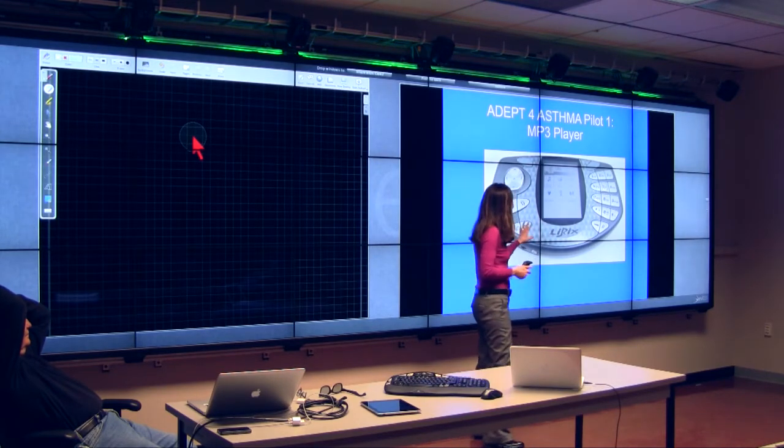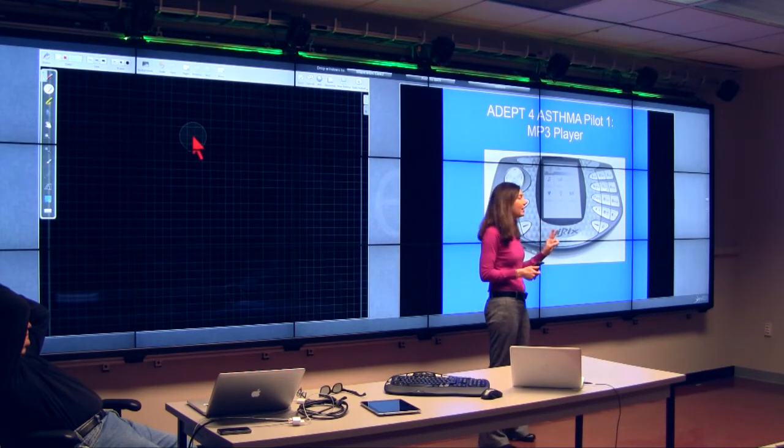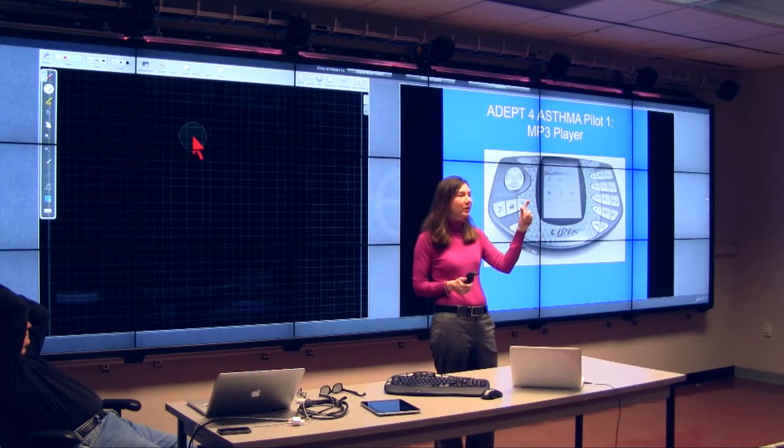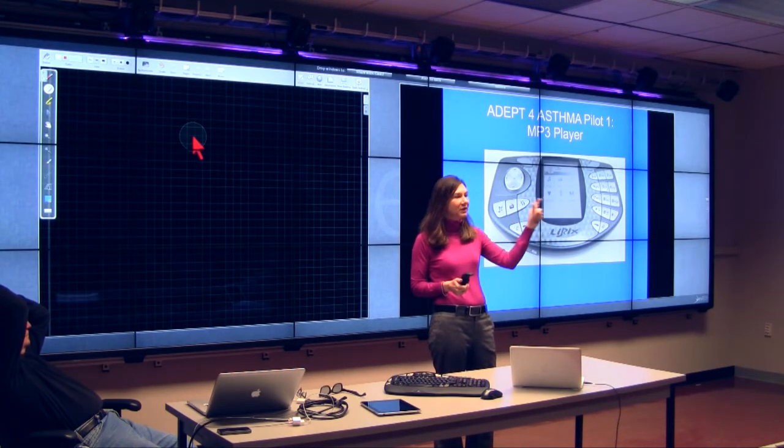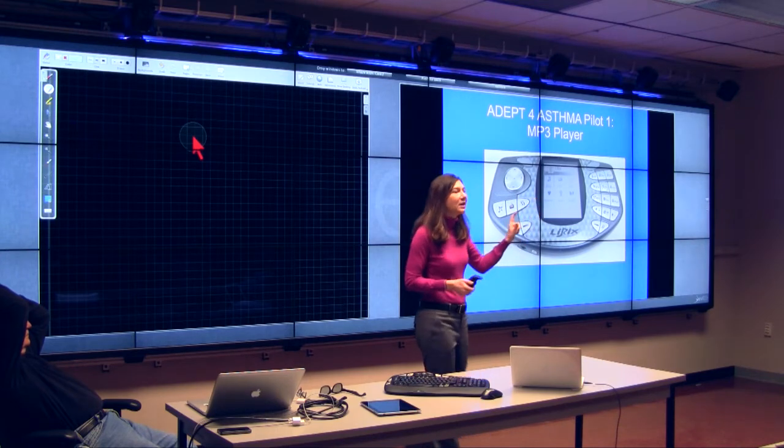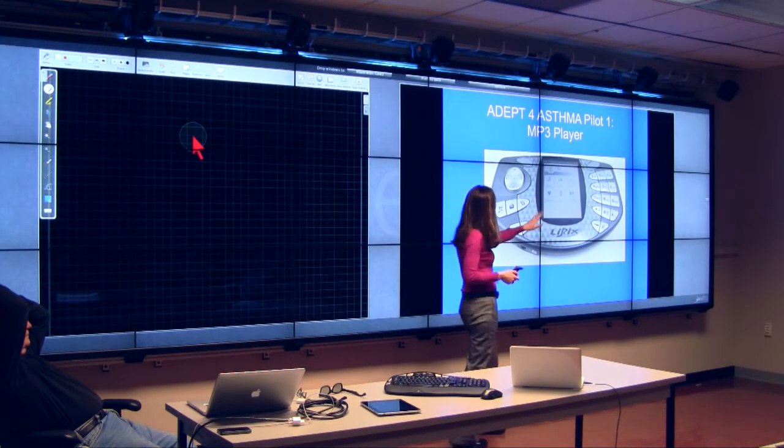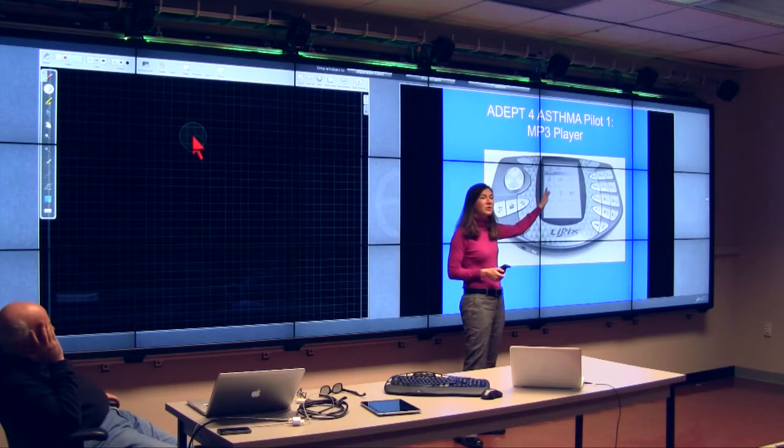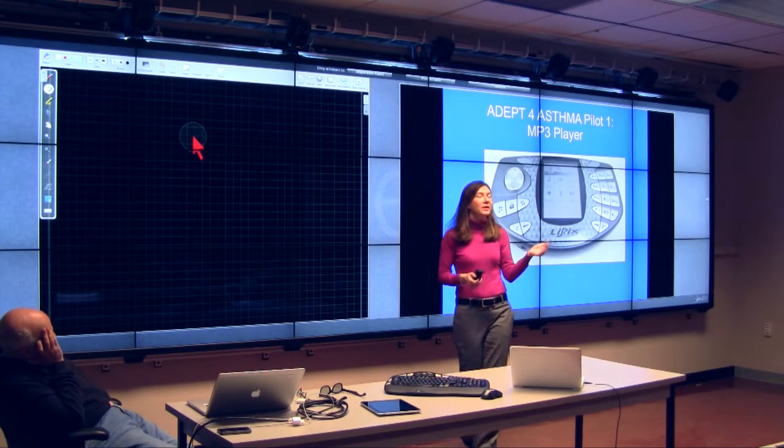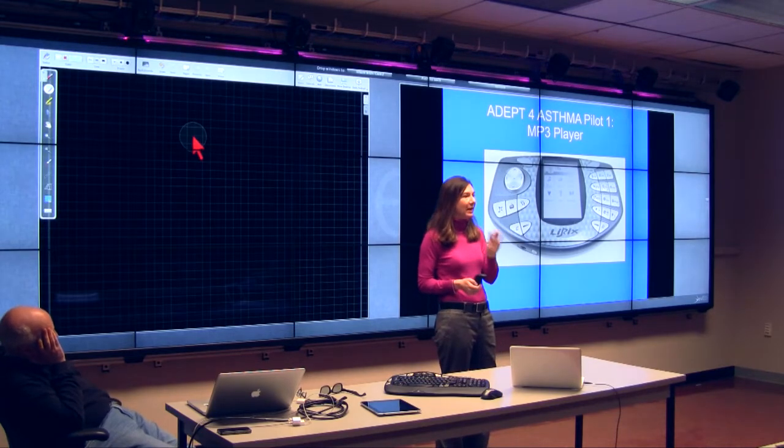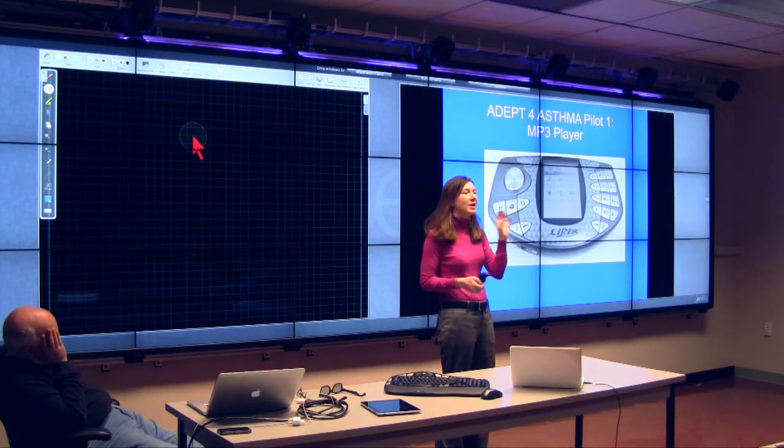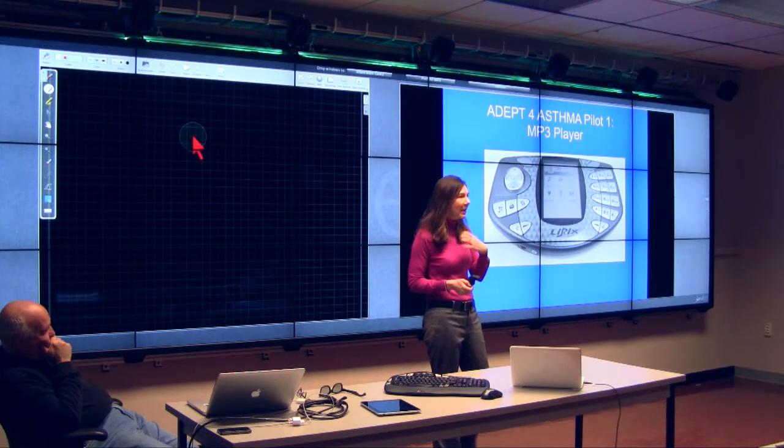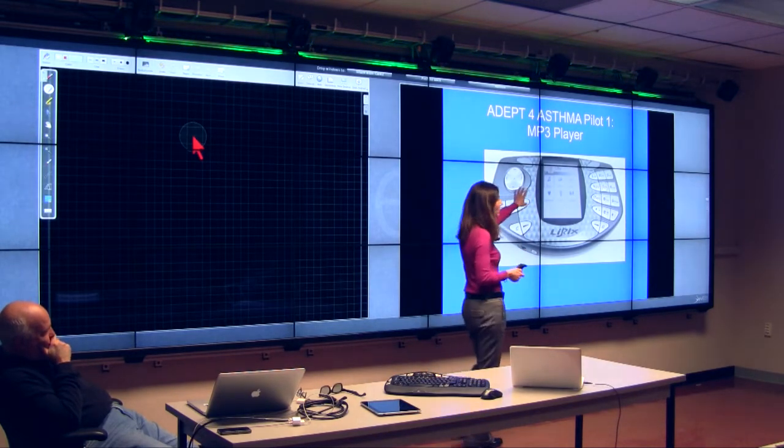The other thing we did is we had two patents so that, you know when you get a movie, you rent a movie, they have an FBI warning. You can't see the movie until you've seen the FBI warning. We had technology so if they were to listen to the music track that they wanted to listen to, they could not skip our asthma message. They had to listen to our message to get the music that they wanted.